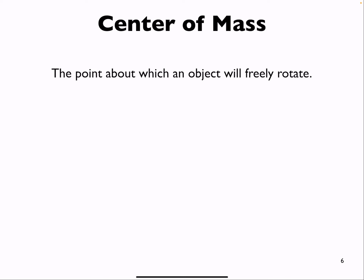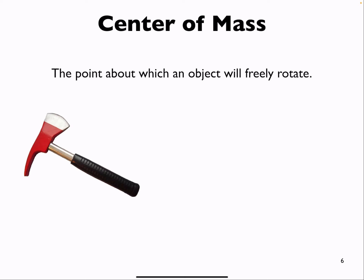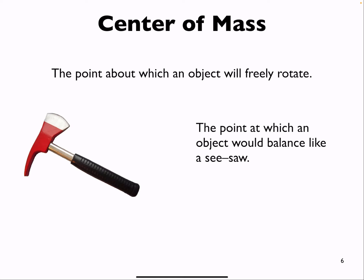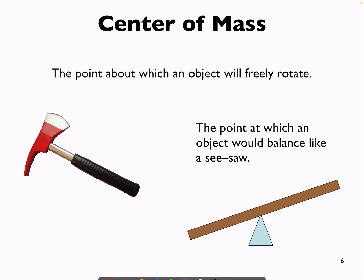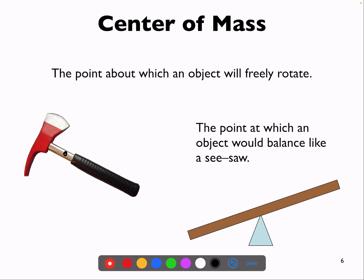The definition of center of mass is the point about which an object will freely rotate. For instance, if you have something like an X, it would rotate around somewhere in the middle if you threw it. It's also where something would balance like a seesaw - so if this were a uniform object, we would expect the balance to happen somewhere near the middle.